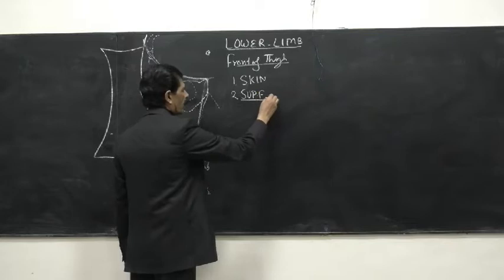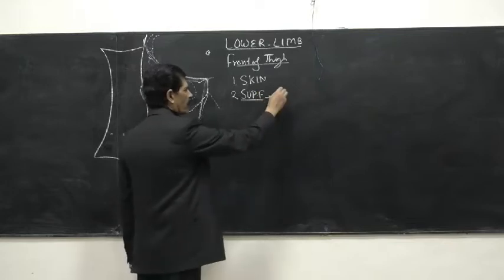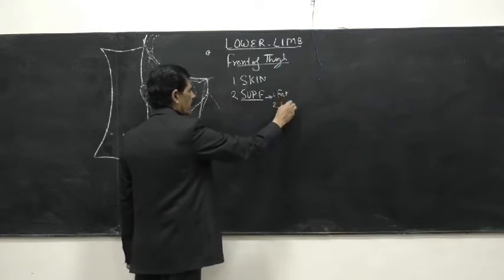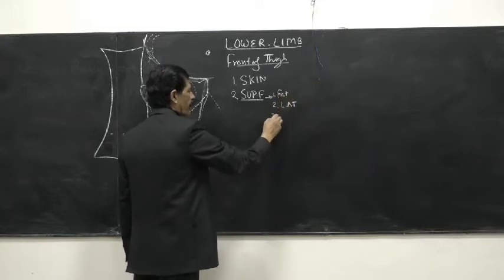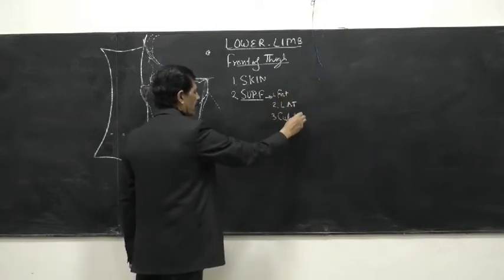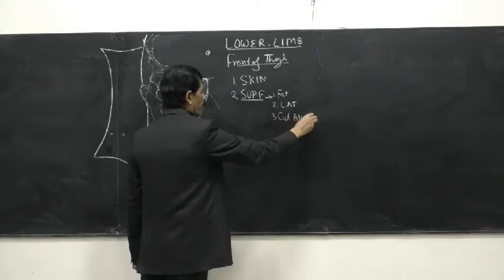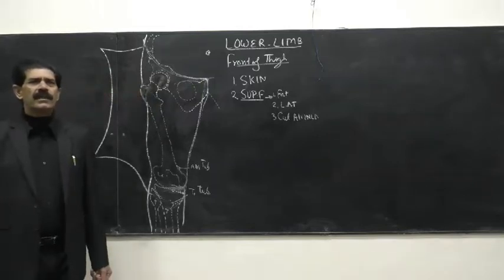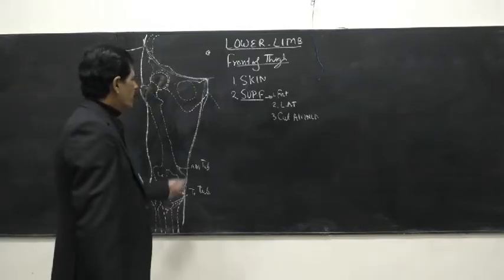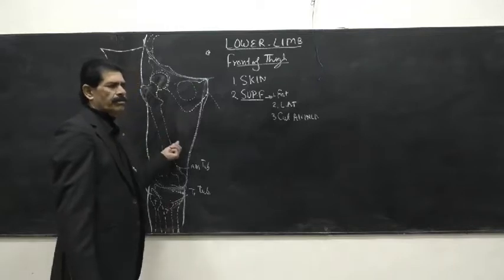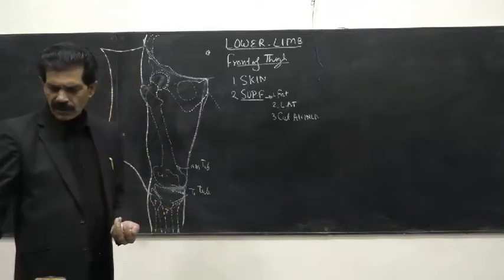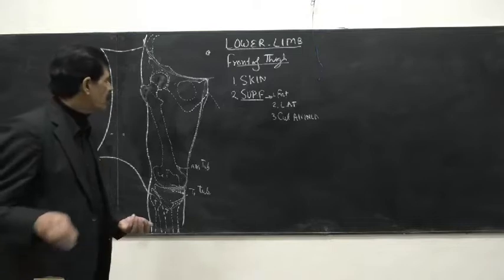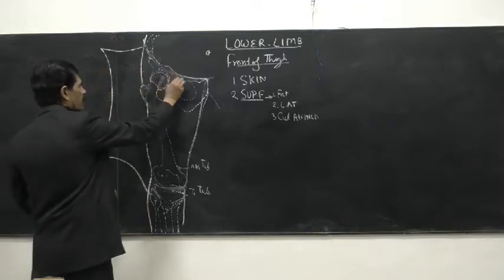Here we see the superficial fascia. Its composition is: yellow-colored fat, and loose areolar tissue which holds this fat. It also contains cutaneous veins, nerves, and lymphatics — the same arrangement from head to toe, as skin is covering the body. So below the skin is the superficial fascia. When we remove the skin, we find yellow-colored fat everywhere — that is the superficial fascia.